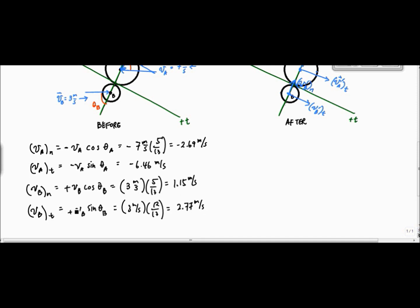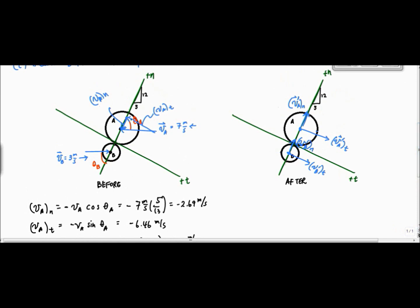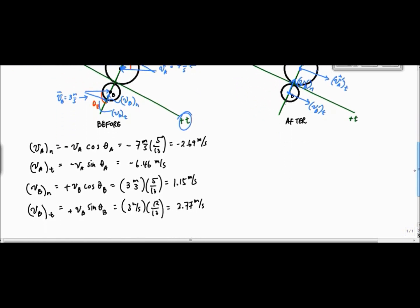And then here, VBT is equal to VB sine theta B, which is 3 meters per second times 12 over 13, which is 2.77 meters per second. Notice these are each positive because when I break up my components here, this would be VBT and this is VBN before impact. They're all in the positive sense of the coordinate systems I've established, plus N and plus T. So I've got my components broken down now.